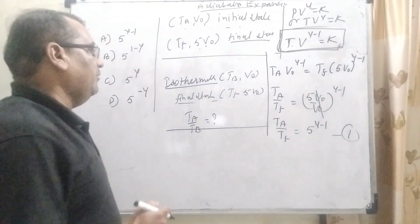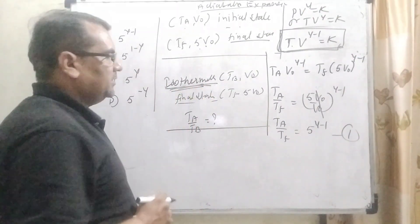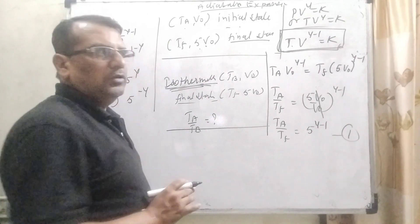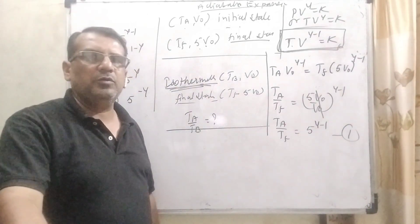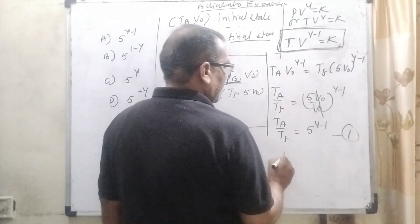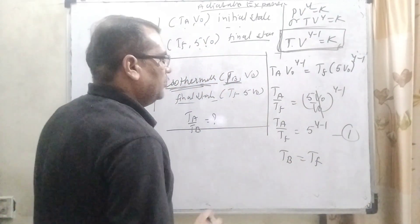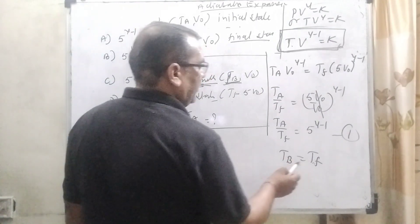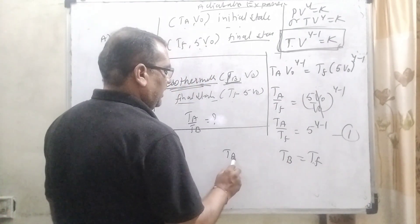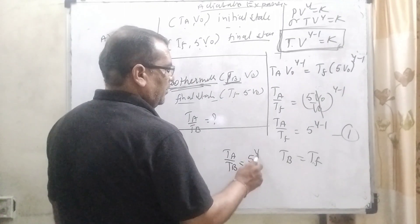And here we have given another mole in an isothermal process. We know that the condition for an isothermal process is the temperature remains the same. Here the initial temperature is given as TB and the final temperature is given as TF. So here substitute TF equal to TB. Then TA upon TB equals 5 raised to the power (gamma minus 1).